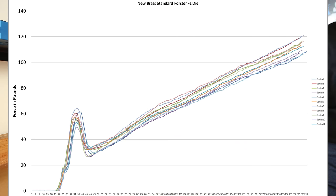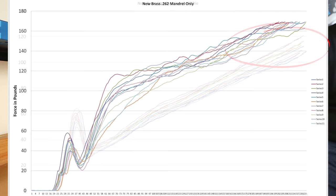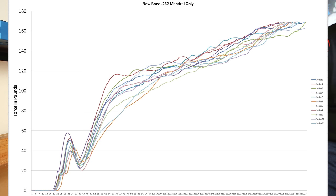Option number four, our Forester full length sizing die. While it's clear our initial seating force to seat our projectile was a little bit higher than our other methods, I thought this graph was very interesting and appeared to be the most consistent one so far. One of the most interesting things about this graph to me is the maximum force applied barely got over 120 pounds. Comparative to our other samples so far, this is a significant difference.